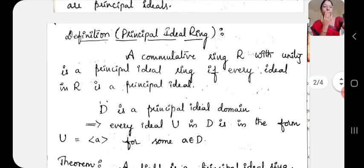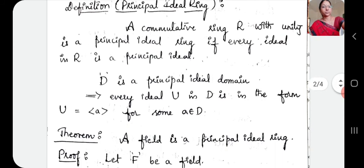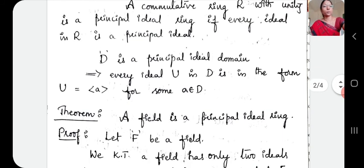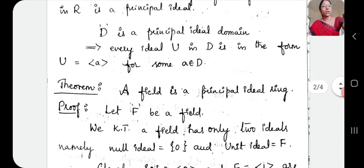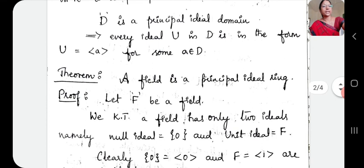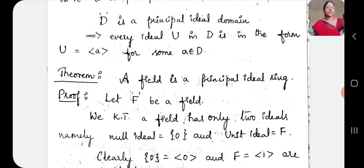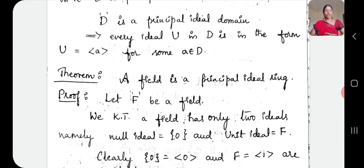Principal ideal domain means: suppose D is a principal ideal domain, then if every ideal U in D is of the form U equals the ideal generated by A, for some A belongs to D — if you are able to say that every ideal is generated by some element — then we say that every ideal is a principal ideal, and hence we can call it a principal ideal domain.